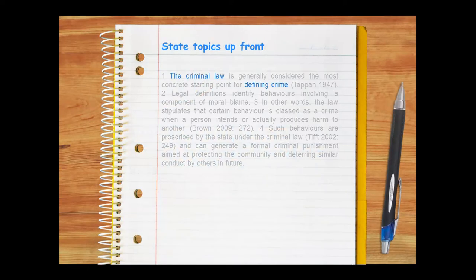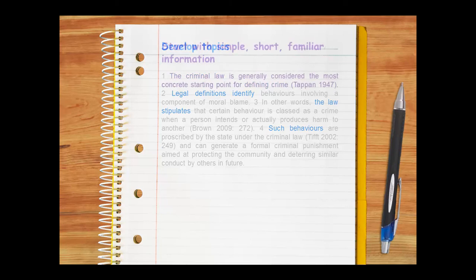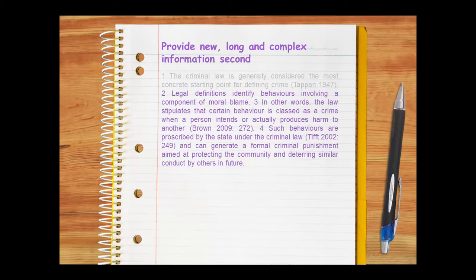If we look at the paragraph structure, we can see that it begins by stating topics up front, then develops these topics in the remainder of the paragraph. In addition, the paragraph begins with simple, short, familiar information and concepts, which are followed by new, long, complex information and ideas. This topic development structure and its movement from simple, short, familiar information to new, long, complex information help the reader prepare for what comes next and greatly assist cohesion.